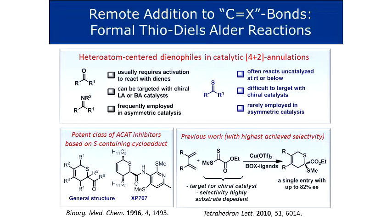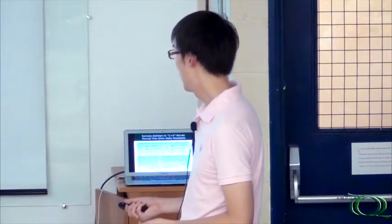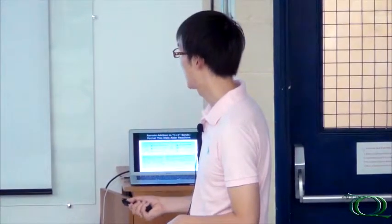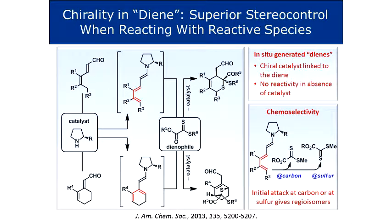Medicinal and big pharma companies have examined the cycloaddition products of thio-Diels-Alder reactions and found good biological activities, but there were simply no ways to make these enantioselectively using catalysis. The best approach in 2010 used copper catalysis with a box ligand, where the chiral catalyst targeted the heterodienophile and reacted with a diene to form a sulfur-derived heterocycle with up to 82% ee. However, this is only a single entry — if you change the substituents, the ee drops dramatically.